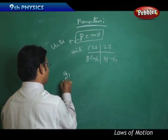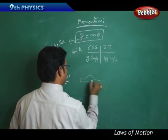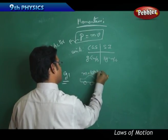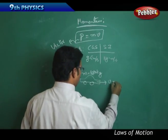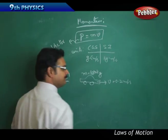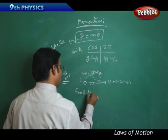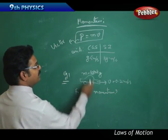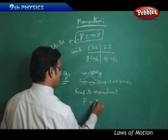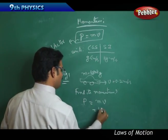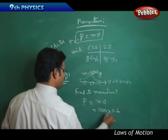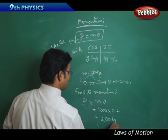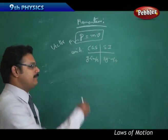Let's take a numerical example. A car of mass 1000 kg moves with a velocity of 0.2 meters per second. Find its momentum. Using p = mv: p = 1000 × 0.2 = 200 kg·m/s. So the momentum of the car is 200 kg·m/s.